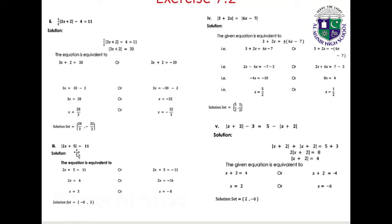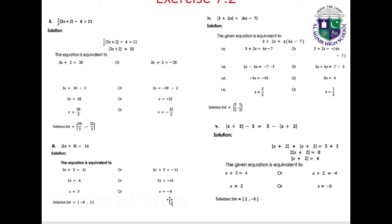Part 3: |2x plus 5| equals 11. The equation is equivalent to 2x plus 5 equals 11 or 2x plus 5 equals minus 11. From the first: 2x equals 6, so x equals 3. From the second: 2x equals minus 16, so x equals minus 8. Solution set: {3, -8}.